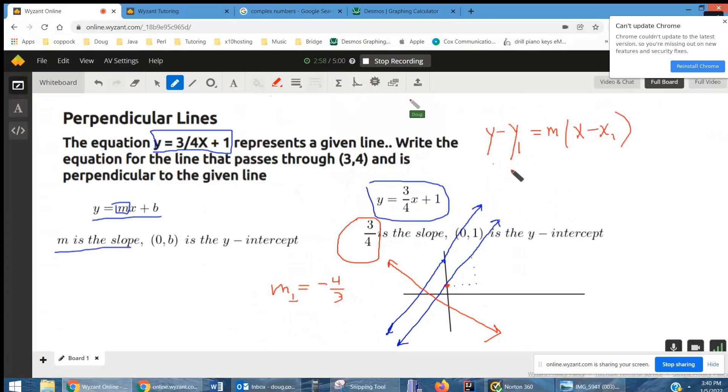Well, in our case, for the perpendicular, slope of the perpendicular is negative four-thirds, y sub 1 is 4,